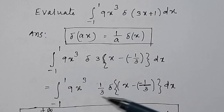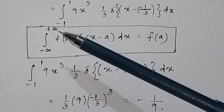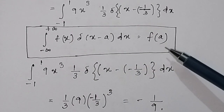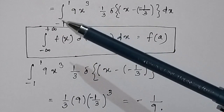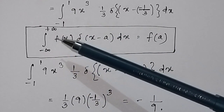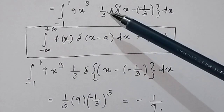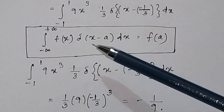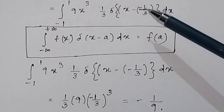For this we have to apply another property of the delta function. This property is: the integration from minus infinite to plus infinite of f(x) delta(x minus a) dx. The limits of integration are given as minus 1 to 1, but we can take the limits from minus infinite to plus infinite. Here 1 over 3 is a constant, so we can take it outside. This will be in the form f(x) delta(x minus a), where f(x) is 9x cubed and a is minus 1 over 3.